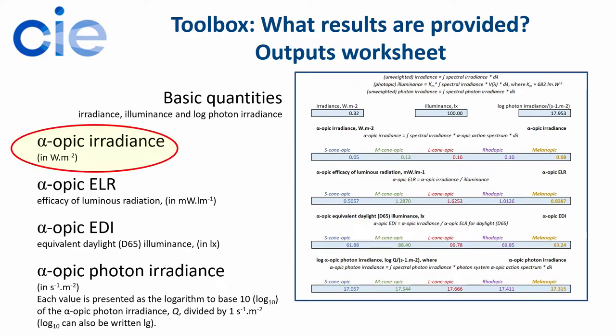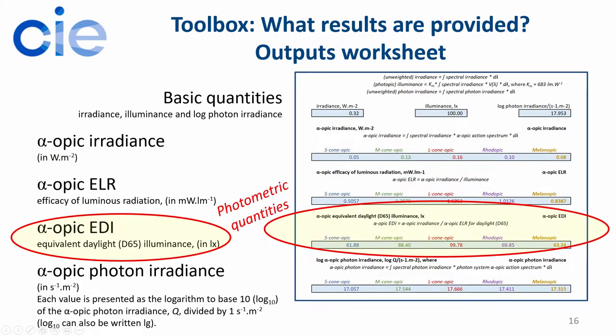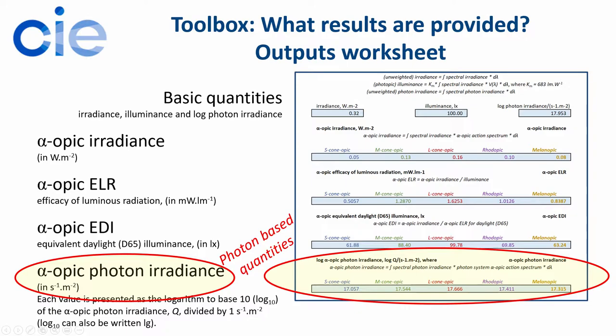For example, weighted irradiance values, equivalent illuminance values, and weighted photon irradiance values, which are sometimes used in photobiology. So the three systems are known officially as the radiometric system, the photometric system, and finally the photon system.